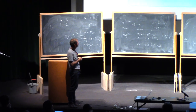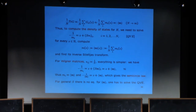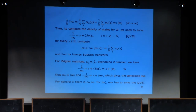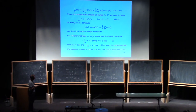For Wigner matrices, S_{ij} = 1/N, so (Sm)_i is independent of i — it's just the average of all m's. The equation then says −1/m_i equals z plus the average of m, which is the same for every i, so all m_i's are equal to each other. You plug back and get the well-known quadratic equation for the Stieltjes transform of the semicircle law. For general S there is no such simplification — you must solve the full quadratic vector equation.